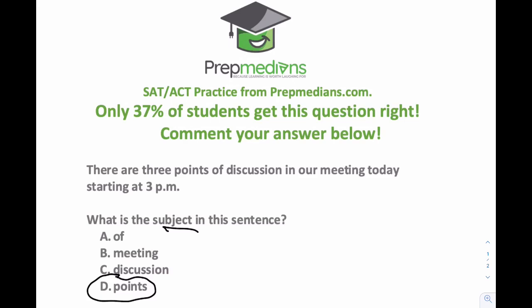The best way to identify the subject is by identifying first the verb. In this sentence, the verb is actually the word 'are' — it's a state-of-being verb. It's a verb that we often overlook in English, even though in a foreign language class such as Spanish, it's one of the first verbs we learn: 'ser,' conjugated into 'son.' These are the things we often overlook in English grammar.